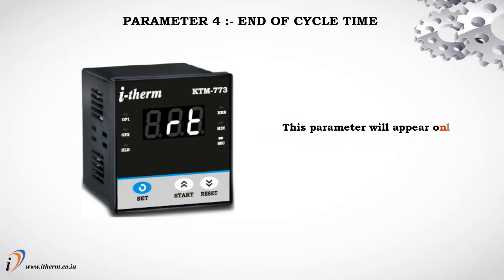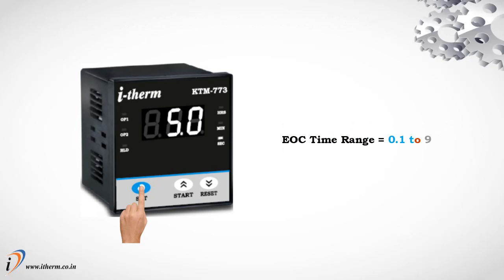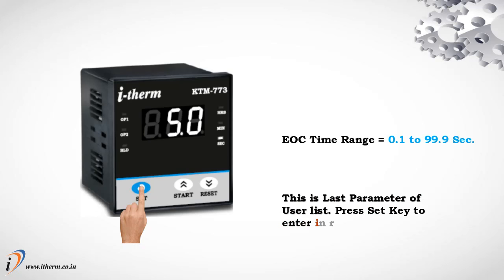Parameter 4: End of cycle time. This parameter will appear only if the selected output 2 function is end of cycle. End of cycle time range: 0.1 to 99.9 seconds. This is the last parameter of the user list. Press the set key to enter run mode.